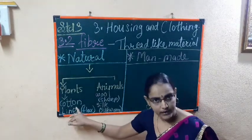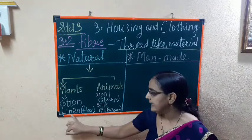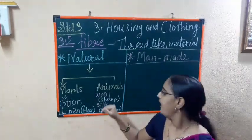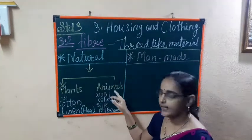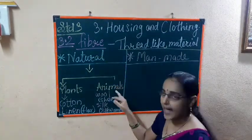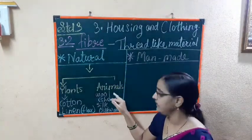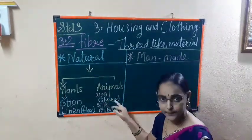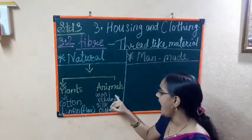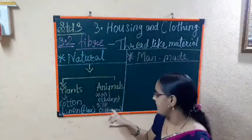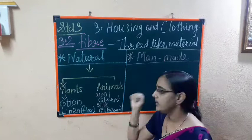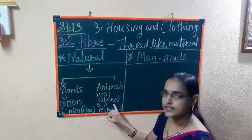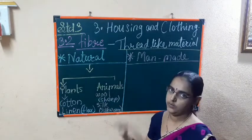We get cotton from the cotton plant and linen from the flax plant. From animals, we get wool from sheep, and silk from the silkworm. Wool is used for making woolen clothes, and silk is used for making silk clothes.